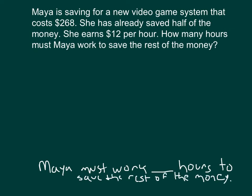What do we mean by the rest of the money? She has already saved half of the money, but that's only half of the amount she's already saved. She still has to save and earn the other half. Let's draw a bar model to represent the equation we'll have to solve.